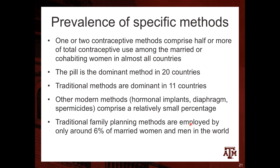One or two contraceptive methods comprise half or more of total contraceptives among married or cohabiting women in almost all countries. The pill is the dominant method in 20 countries, and traditional methods are dominant in 11 countries. Other modern methods that comprise a relatively small percentage include hormonal implants, diaphragm, and spermicides. Traditional family planning methods are employed by only around 6% of married women and men in the world.